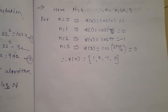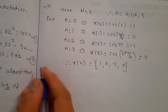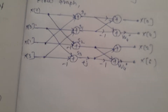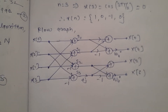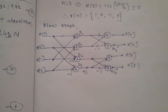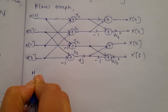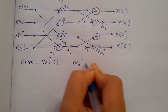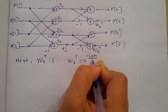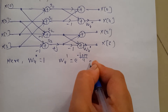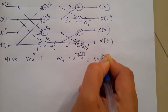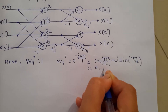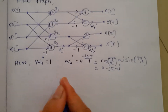Now we have to draw the flow graph. This is the diagram for the flow graph of a 4-point DIT-FFT. Here the twiddle factor W4^1 = e^(-j2π/4) = e^(-jπ/2) = cos(π/2) - j·sin(π/2) = 0 - j = -j.